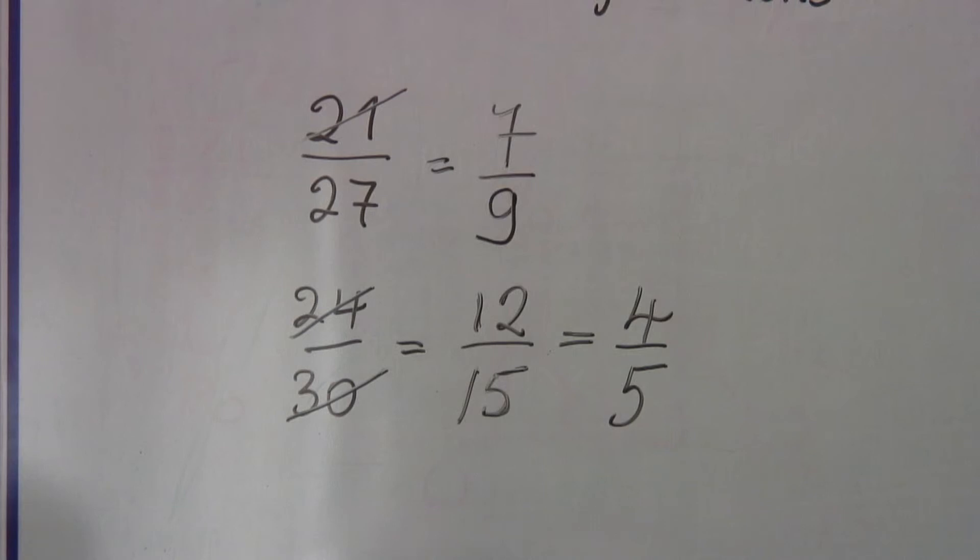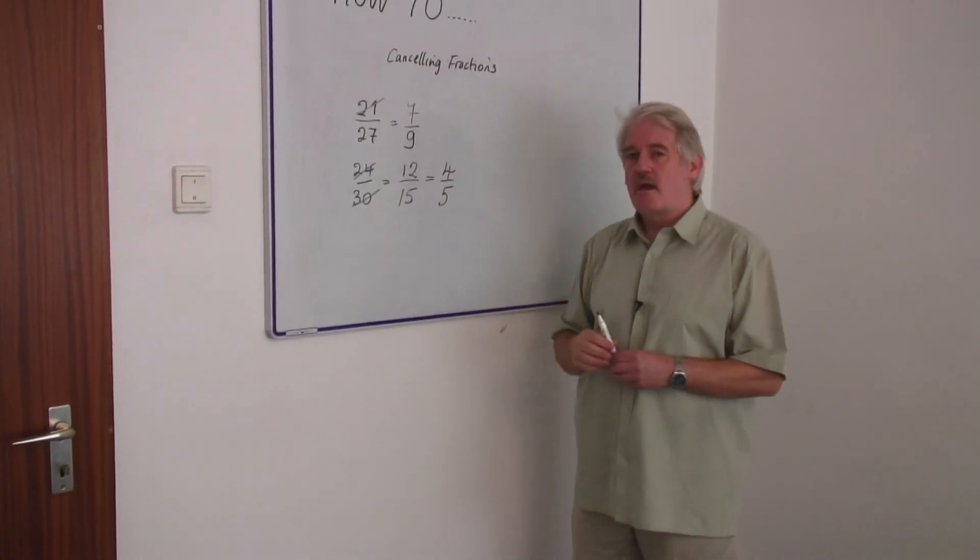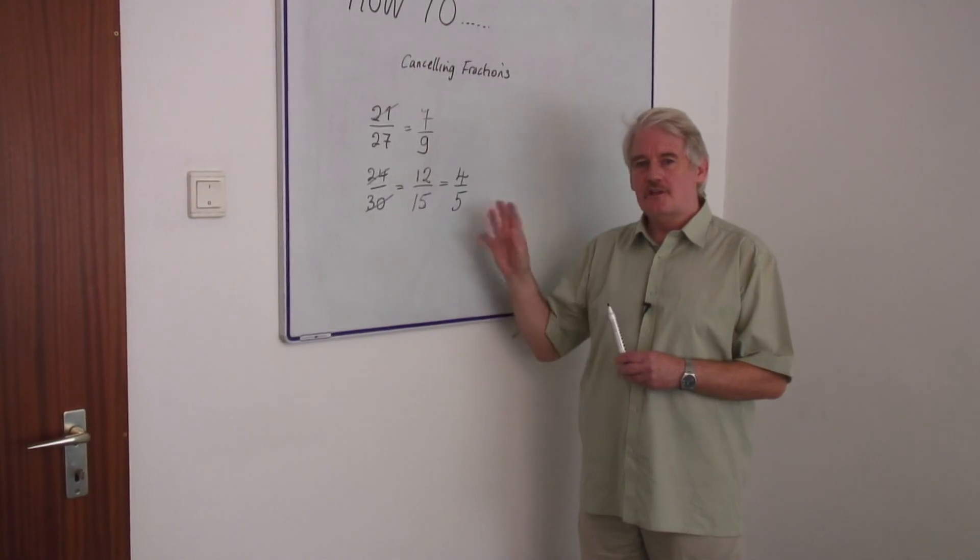What I'm trying to do when I'm cancelling fractions is to get the simplest number, so that I can't go any further, I can't divide top and bottom by the same number. Just keep it simple.